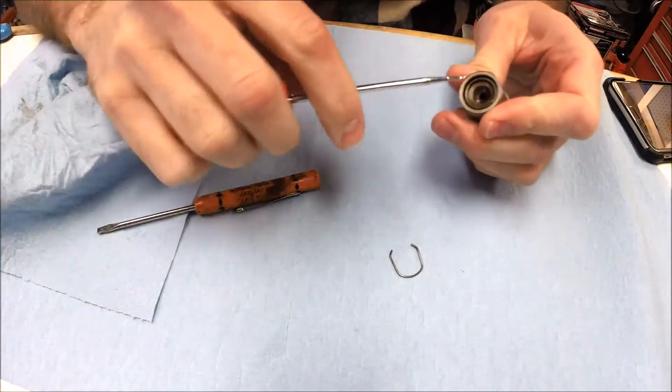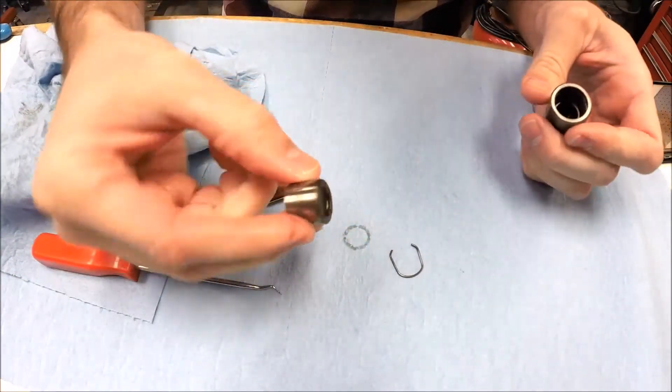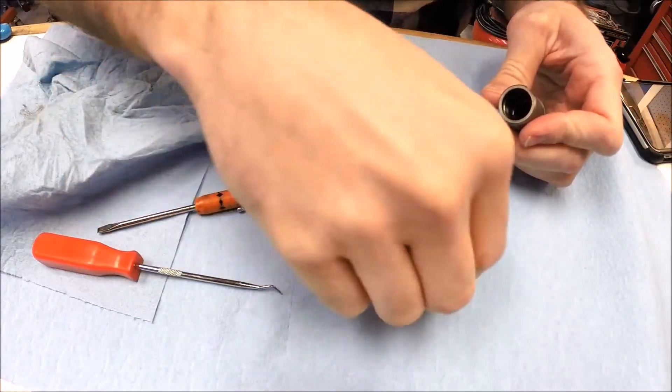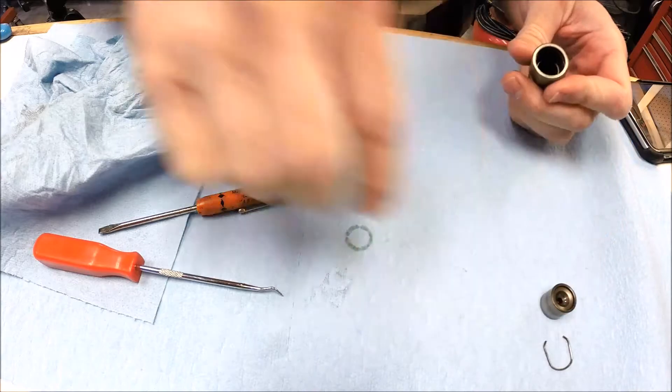Now we can pull the plunger out. So we have this piece. Set them up over here. Clip. This top piece.